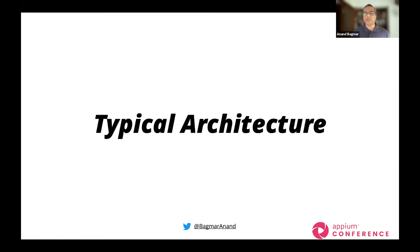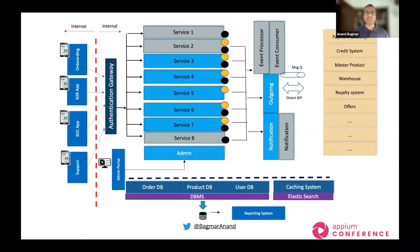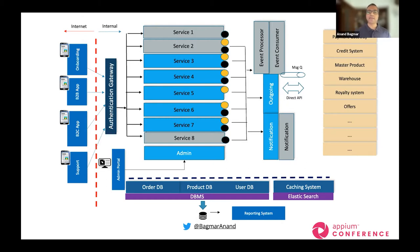In any complex system that we are working with, a typical architecture would be something like this. There is one or more front-end applications — it could be native apps, hybrid apps, mobile web, or desktop web. Those front-end applications communicate with your back-end systems through some authentication gateway. The back-end system is also complex — you could have a monolith, microservice-based architecture, a hybrid, with a lot of data stores. And however complex your system is, you are still going to communicate with some other systems in the back-end, such as payment gateways, credit systems, and so on.